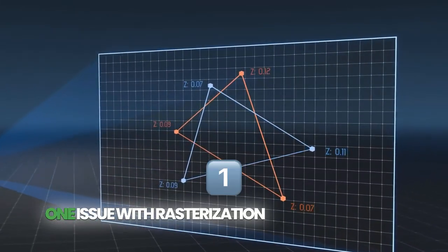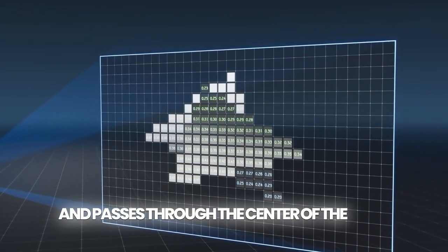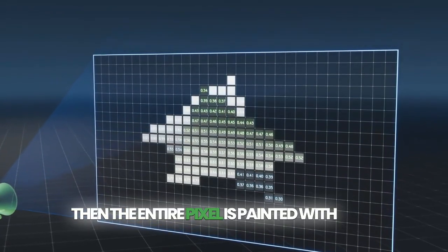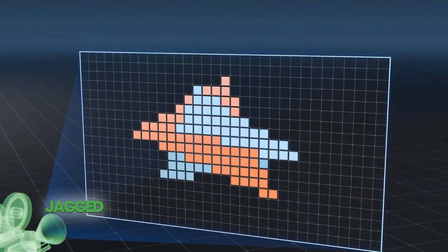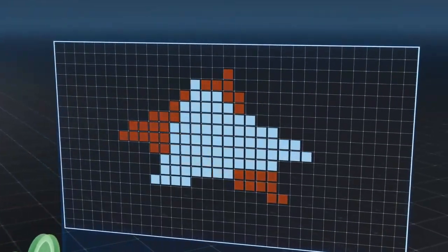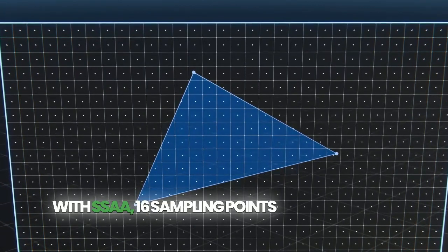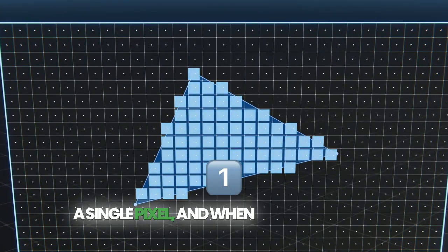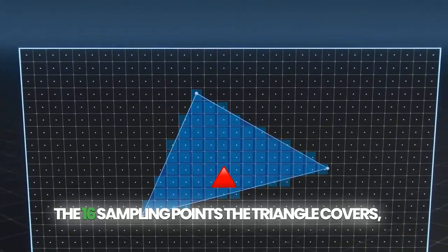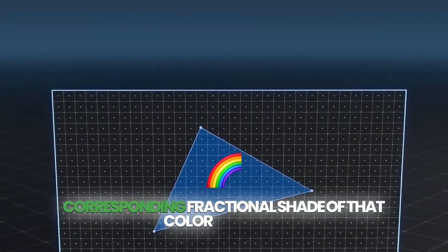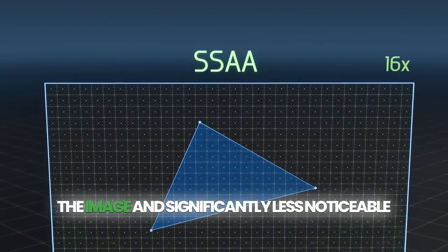One issue with rasterization is that if the triangle cuts at an angle and passes through the center of a pixel, the entire pixel is painted with that triangle's color, resulting in jagged and pixelated edges. To reduce the appearance of these jagged edges, graphics processors implement a technique called supersampling anti-aliasing (SSAA). With SSAA, 16 sampling points are distributed across a single pixel, and when a triangle cuts through a pixel, depending on how many of the 16 sampling points the triangle covers, a corresponding fractional shade of that color is applied, resulting in faded edges and significantly less noticeable pixelization.